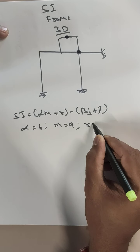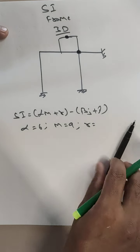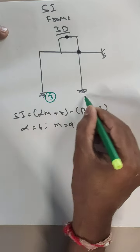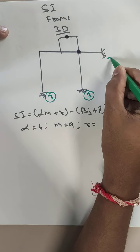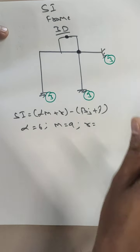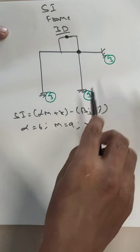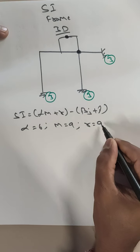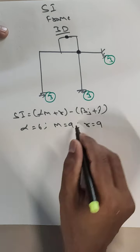Now for r — r is nothing but the number of reactions. If you see here, this support is fixed so it gives 3, this is also fixed so 3, and this is also 3. So 3 + 3 + 3 = 9. So the initial count of reactions is 9.